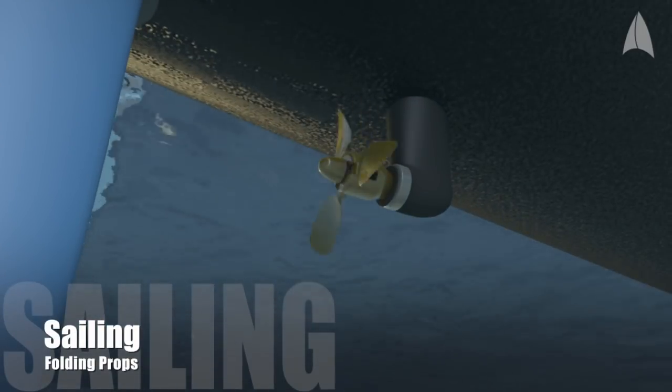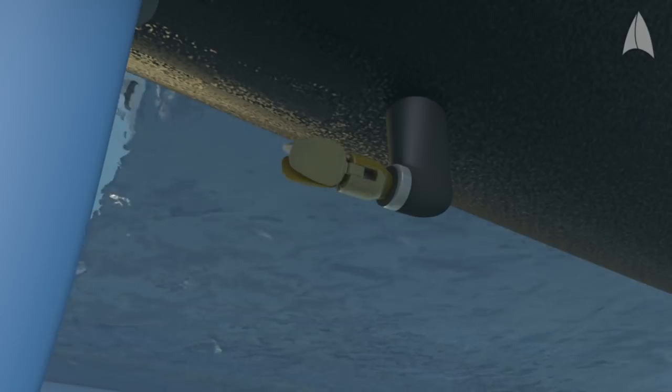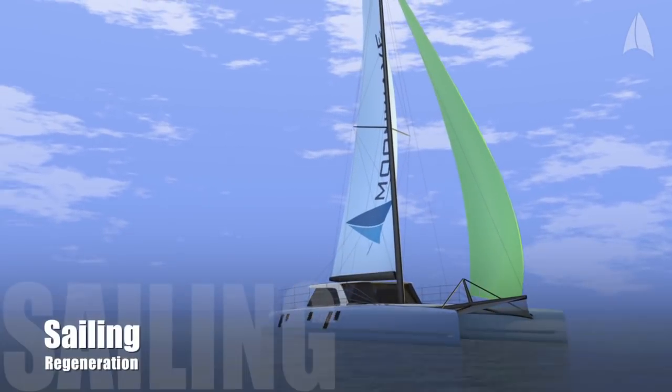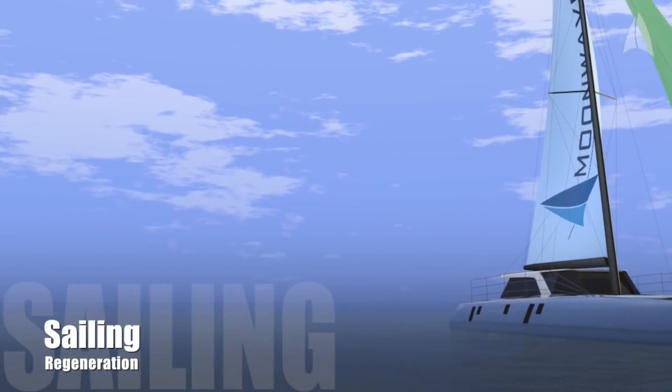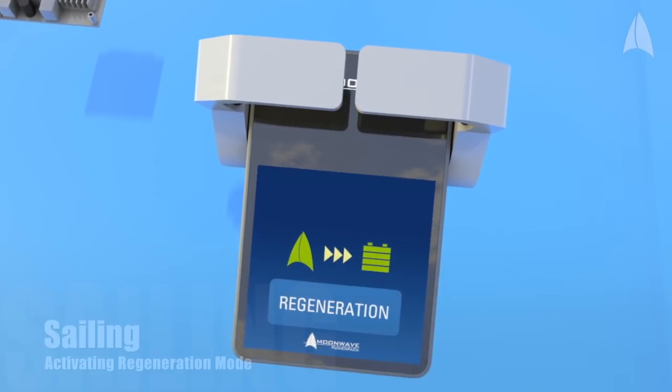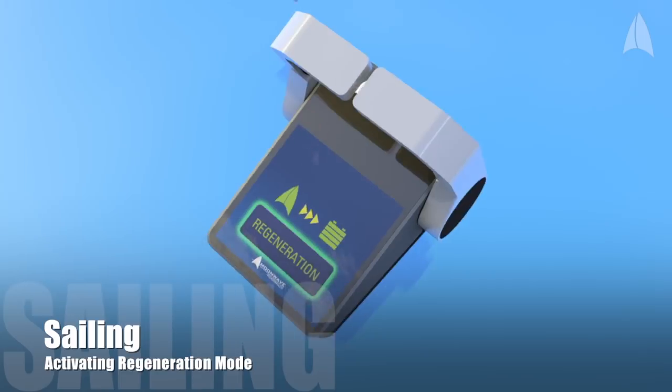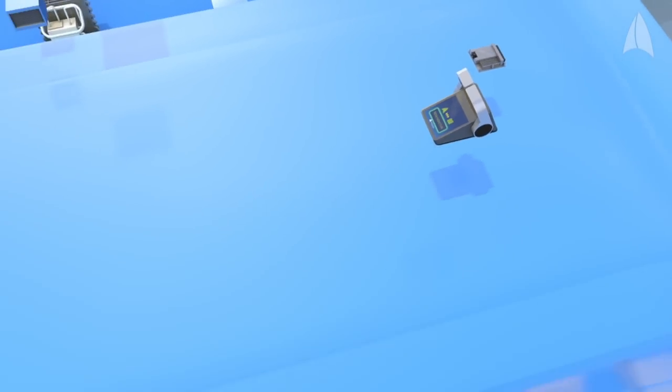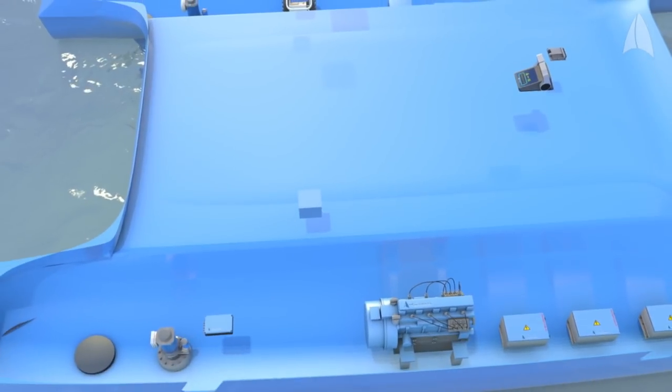The propellers will fold while sailing, reducing drag to a minimum. The batteries can be recharged while sailing by way of regeneration. When activating the regeneration function, the propellers will turn the electrical motors, which become generators and can recharge the batteries.